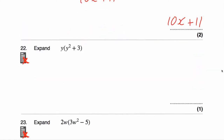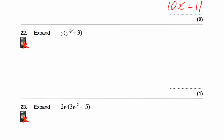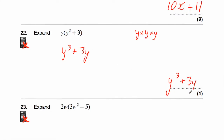Question number twenty-two asks us to expand y(y² + 3). We're going to multiply what's inside the brackets by y. y times y² would be y cubed — because y squared is y times y, and then times another y gives y times y times y, which is y³. Then plus, and y times three would be 3y. The answer is y³ + 3y.